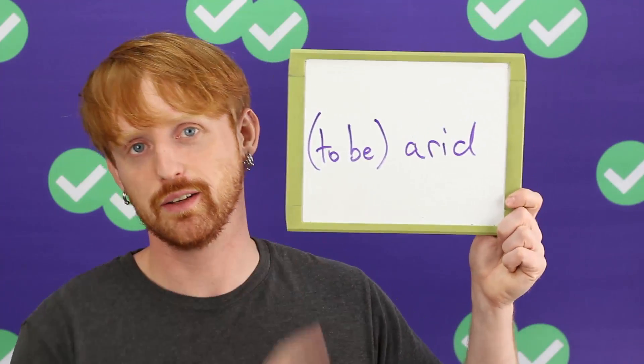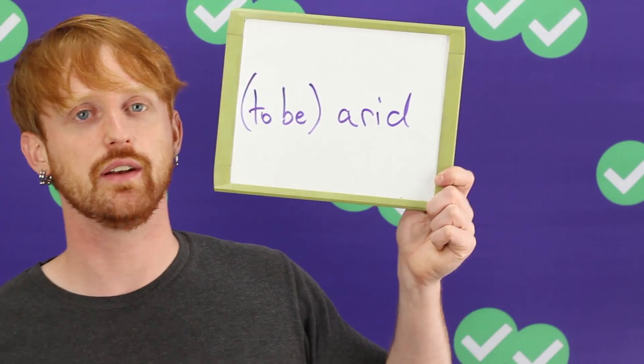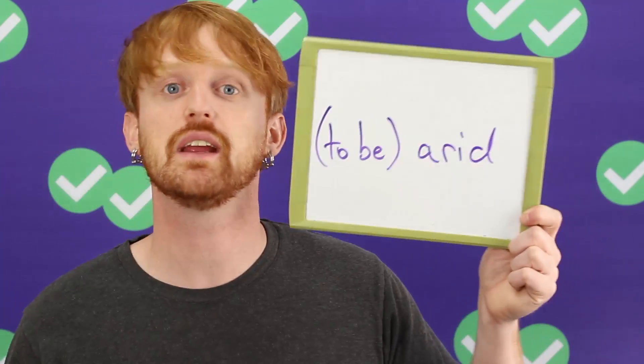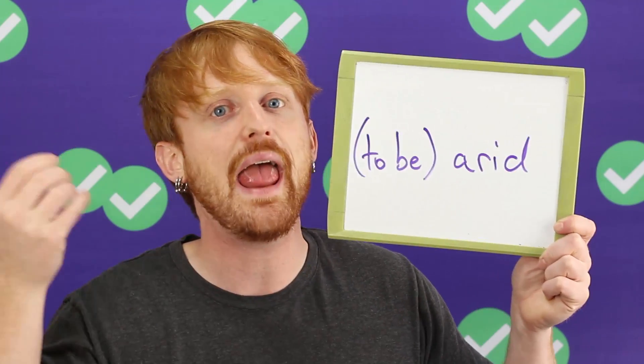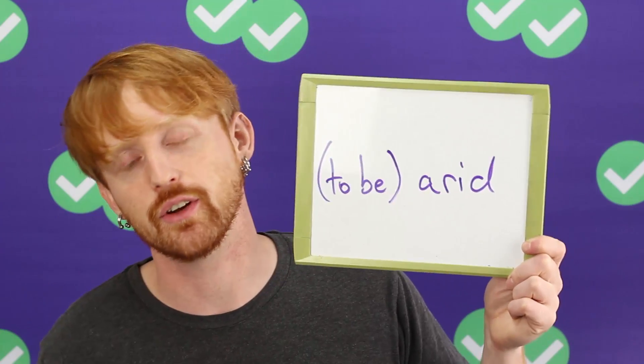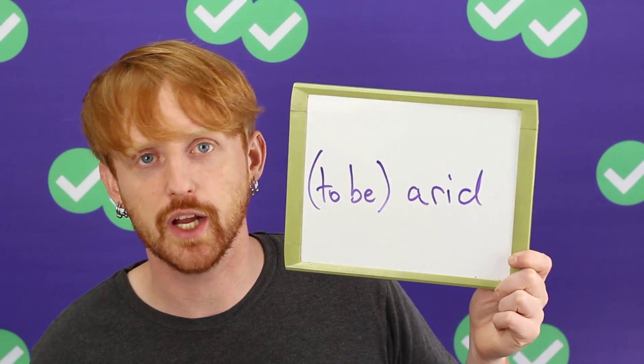Our next word is actually similar: arid. To be arid. Arid is an adjective meaning very dry, but dry in the air, like a desert. It's not just about a drought — it could be about a desert. So this is not just a short period without rain; it just describes the dryness of the general area, an area that doesn't get enough rain. So deserts are arid, and during a drought, a forest might be arid.